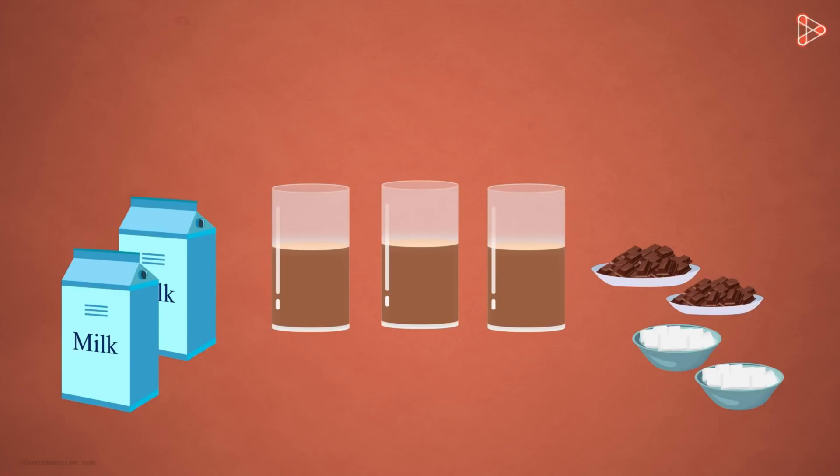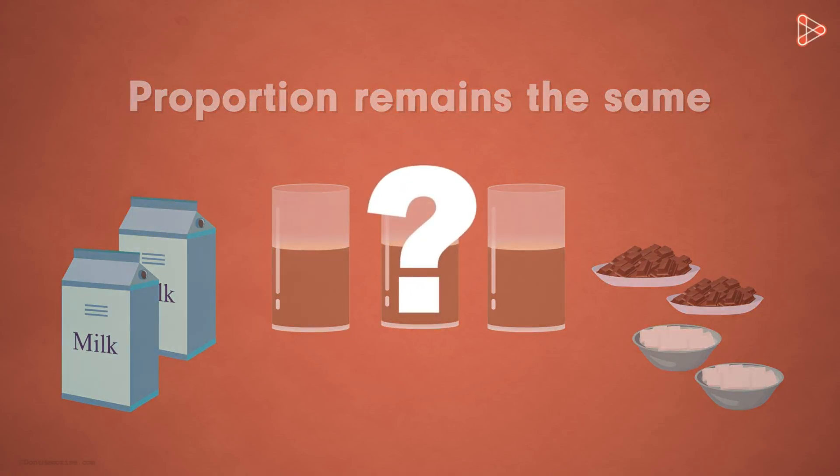Simple, isn't it? It means that for a particular recipe, the proportion of inputs will almost always remain the same. Why are we discussing this along with the concept of atoms?